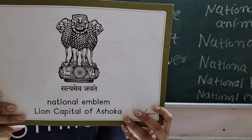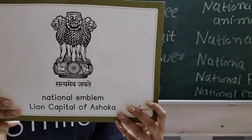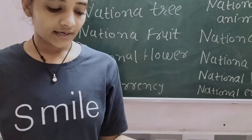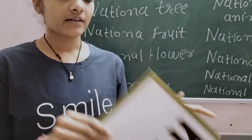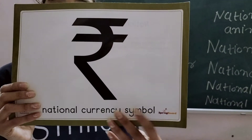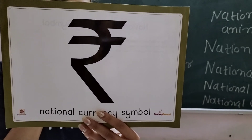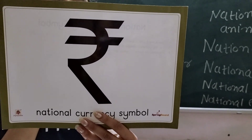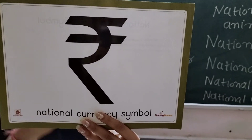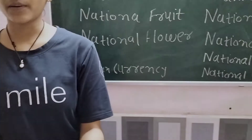Next is the national anthem of India. Then last is the national currency. It is the currency symbol of India, represented on currency notes and coins.